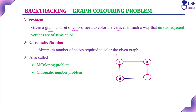For example, if I give green color to vertex A, then the same green color should not be given to vertex B or vertex D, because vertices B and D are adjacent to A. Similarly, if I give red color to vertex C, the same red color should not be given to vertex B or vertex D, because those vertices are directly connected and adjacent to C. So no two adjacent vertices should be given the same color.